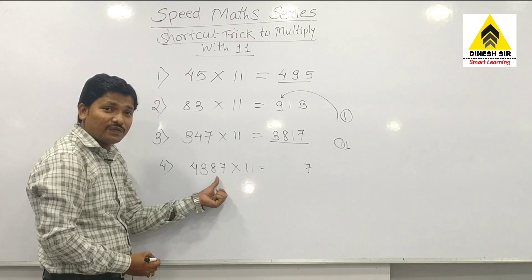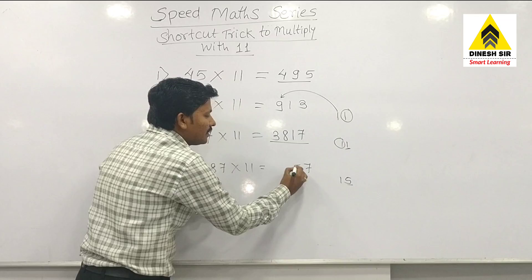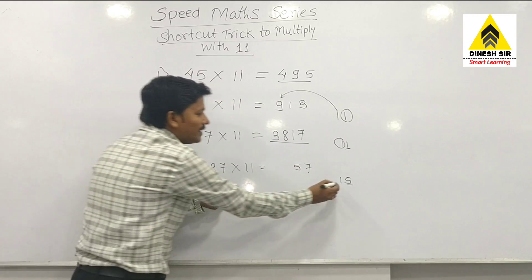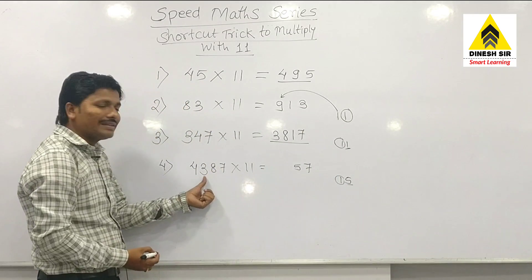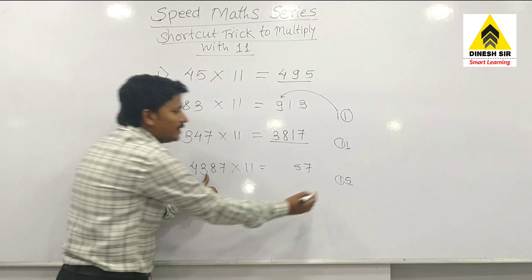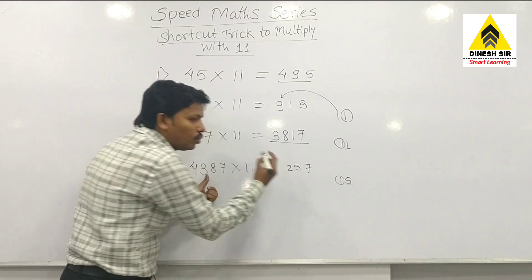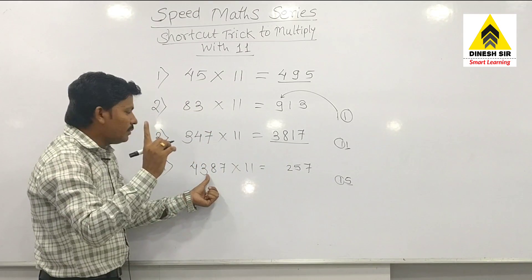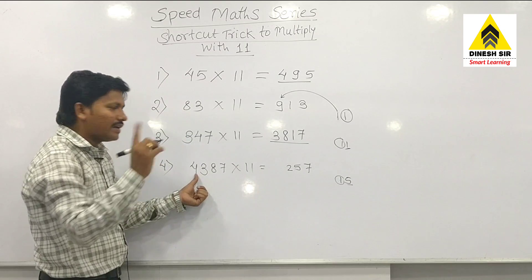7 and 8 becomes 15. Now in 15, write 5 over here, 1 goes to the carry. 8 and 3 is 11, and 1 carry makes 12. Now write 2 only, 1 will be carry.